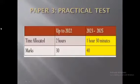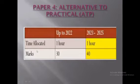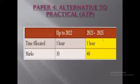Paper three is a practical-based paper which we are not going to attempt. Let's look at paper four — that is alternative to practical. There are major changes in this paper. Total marks up to 2022 were 30, but now from 2023 to 2025 for Physics 5054, it is 40. Time allocated for this paper is 1 hour.